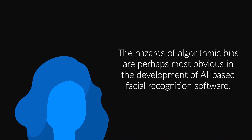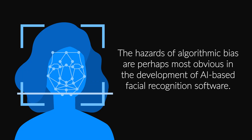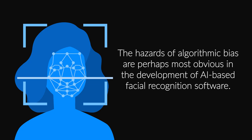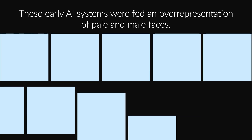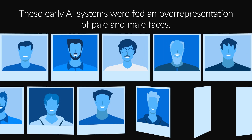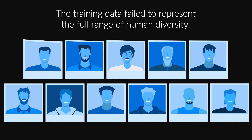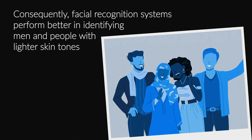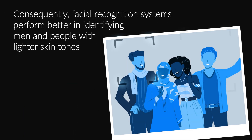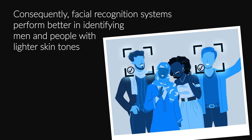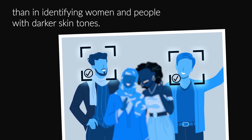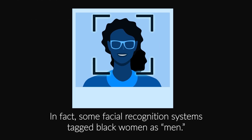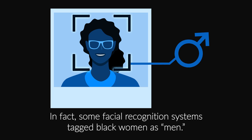The hazards of algorithmic bias are perhaps most obvious in the development of AI-based facial recognition software. These early AI systems were fed an over-representation of pale and male faces. The training data failed to represent the full range of human diversity. Consequently, facial recognition systems perform better in identifying men and people with lighter skin tones than in identifying women and people with darker skin tones. In fact, some facial recognition systems tagged black women as men.